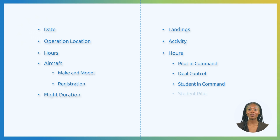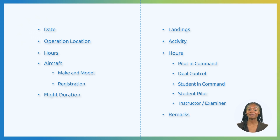Student pilot: if training is being conducted using dual control, the student using the second control logs the hours here. Instructor/examiner: the instructor records the hours in this section, in addition to noting them in the pilot in command section. And last, remarks: this field will note any special circumstances of the flight — for example, in training, the instructor's name will be recorded here.